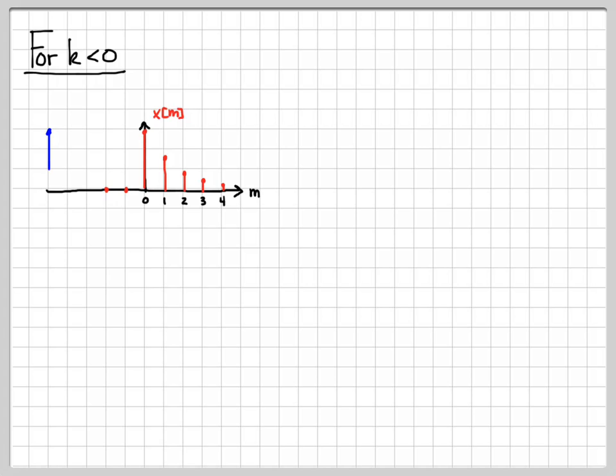When k is less than 0, my signal h[k-m] turns off before time 0. So in this example, I actually plotted it for k equals -2. So it turned off at time minus 2.